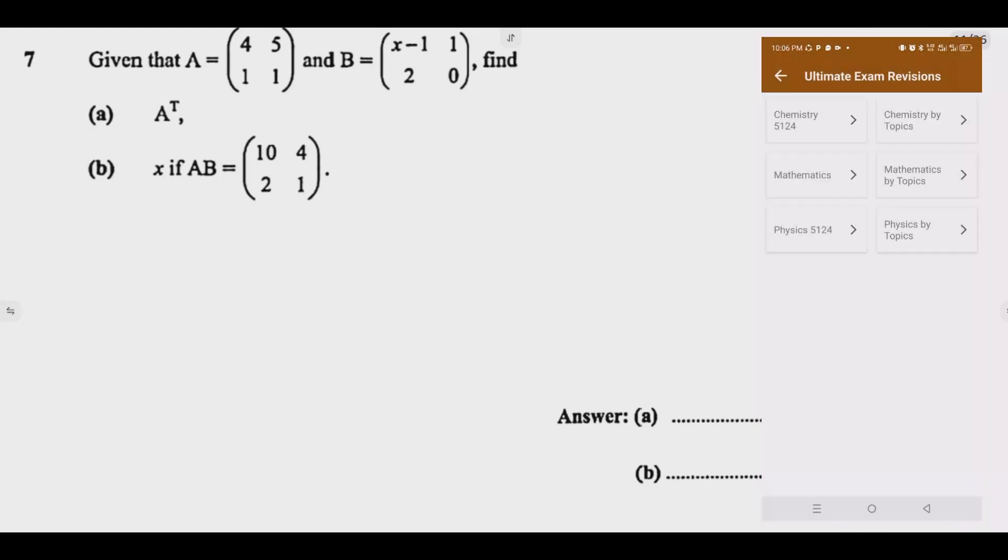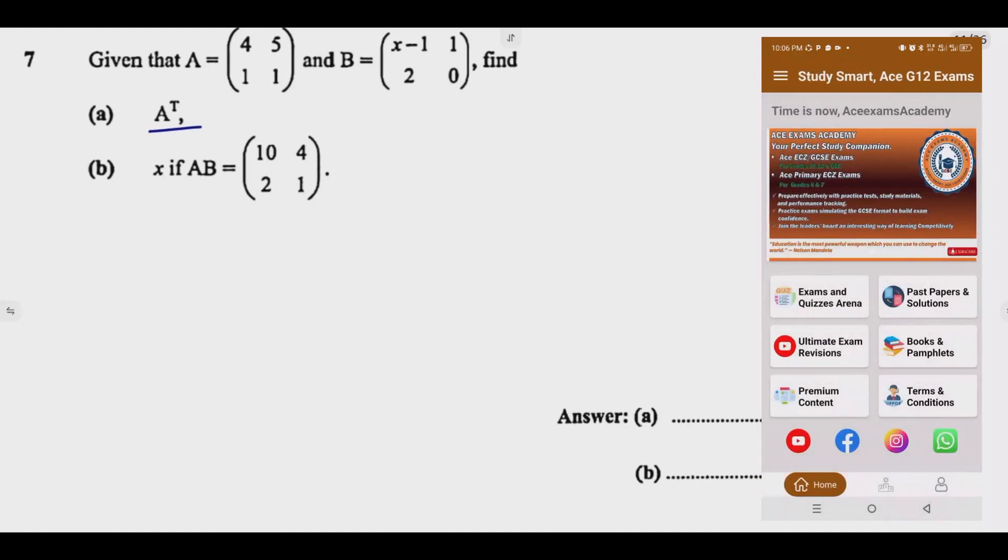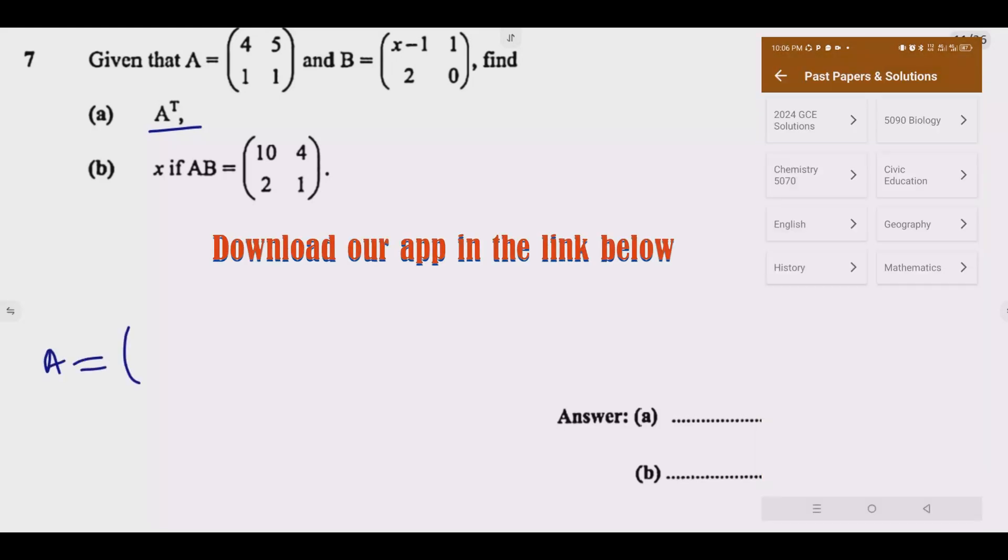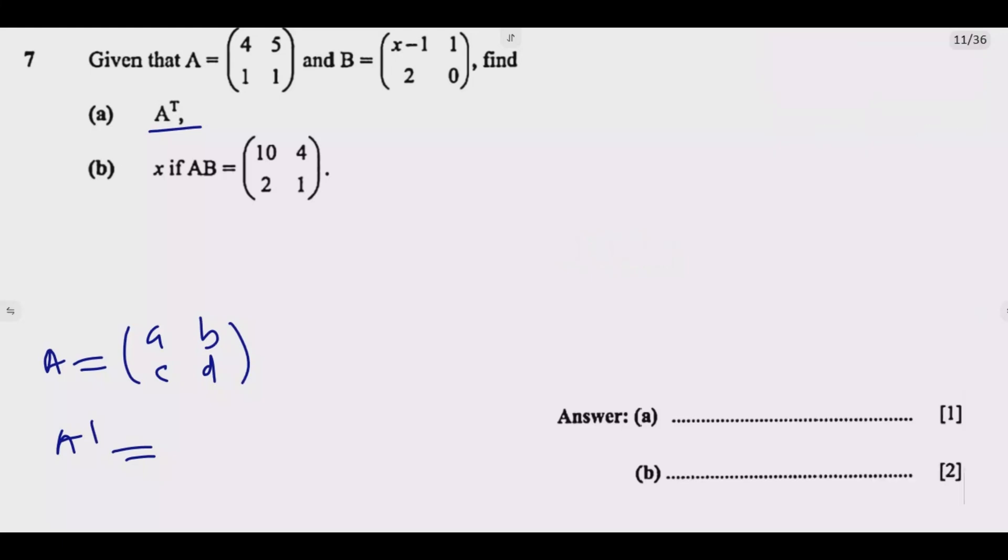What is important is understanding the question. We need to find the transpose. So what is the transpose? If I'm given a matrix A equals A, B, C, D, A transpose means we need to swap - this row becomes a column, so meaning A, B here, then this becomes the second column which is C, D. Which is the same as just swapping B and C.